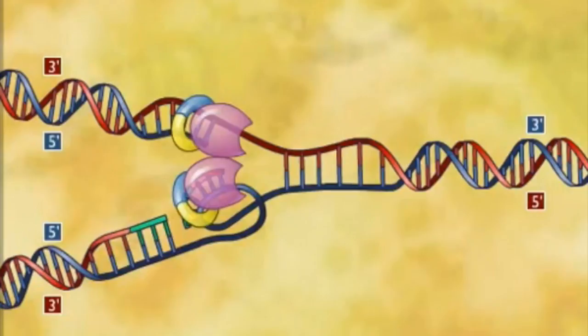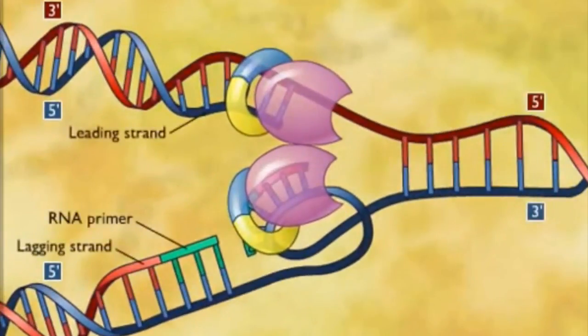Since it cannot attach the segments, DNA ligase joins the final nucleotide of the replacement DNA to the adjacent Okazaki fragment. Once ligase has connected everything, the replication process is complete and two new DNA molecules are formed.